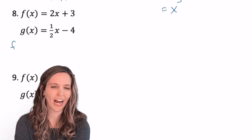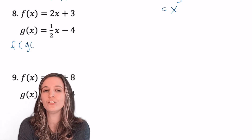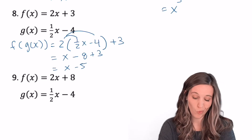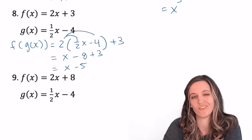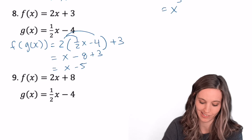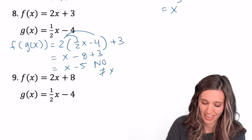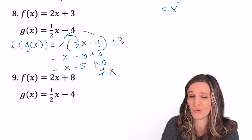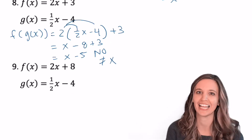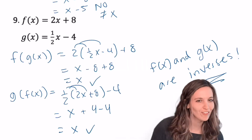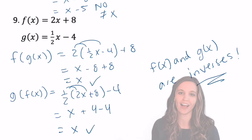Let's try it again — number 8. Go ahead and do f of g of x. F of g of x equals x minus 5. That doesn't equal x, so these aren't going to be inverses of each other. As soon as we get a fail and it doesn't equal x, we can stop and say no. Try the last one — f of x and g of x are inverses for number 9.